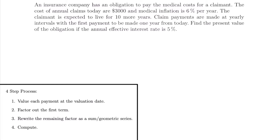We know we're working with a geometric annuity in this case because the insurance company has an obligation to pay these payments of $3,000 annually and every year it's going to increase by 6%. When you have a payment that is changing by a certain percent every payment period, you know you're going to be working with a geometric annuity. Those payments might be increasing or decreasing — in this case it's increasing by 6% — but either way it would still be a geometric annuity.